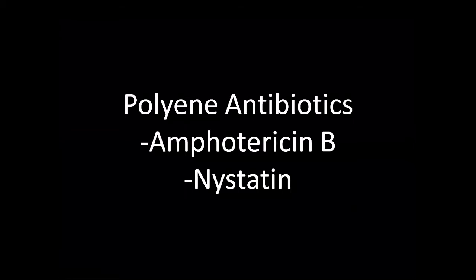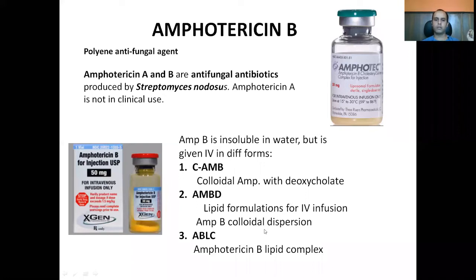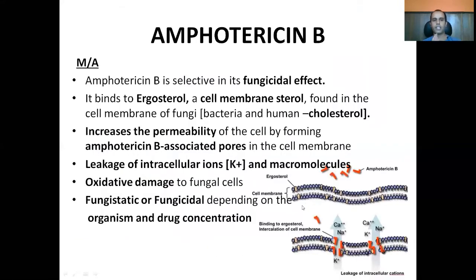Let us start with polyene antibiotics, which constitute amphotericin B and nystatin. Amphotericin is a polyene antifungal agent from Streptomyces nodosus. Both amphotericin A and B are produced from Streptomyces nodosus; however, amphotericin A is not in clinical use. In 1958, the first colloidal type of amphotericin B was found, and then the liposomal form, amphotericin B colloidal dispersion, and amphotericin B lipid complex were discovered later. All are in clinical use now.